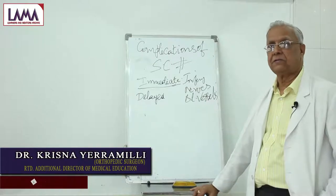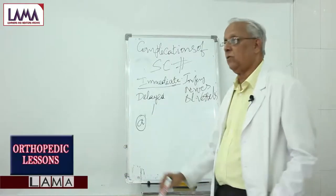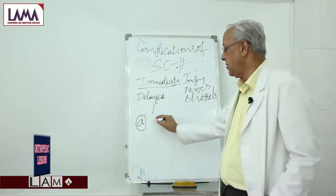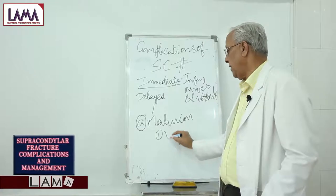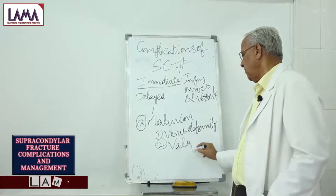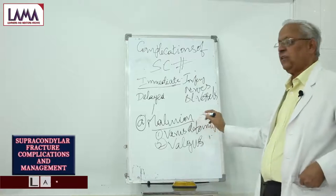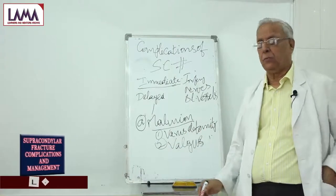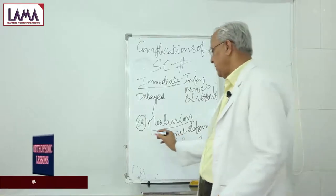For delayed complications, the most common is malunion. In this there are two types: one is varus deformity and one is valgus deformity. Varus deformity — anything around the elbow, we prefix it with 'cubitus,' so it is called cubitus varus deformity.